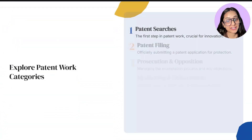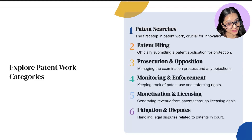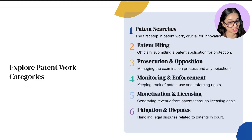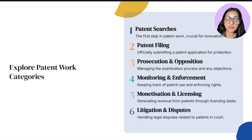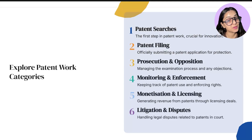Now globally, there are six major categories of work in the patent field. First is patent searches. Second is patent filing. Third is prosecution and opposition. Fourth, monitoring and enforcement. Fifth, monetization and licensing. And sixth is litigation and disputes.